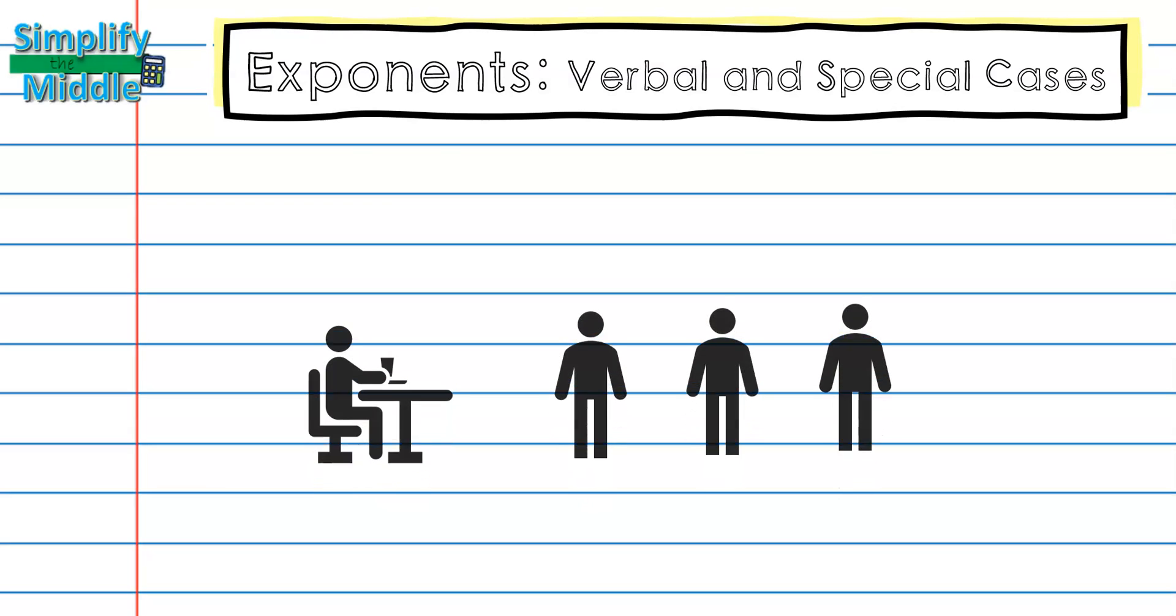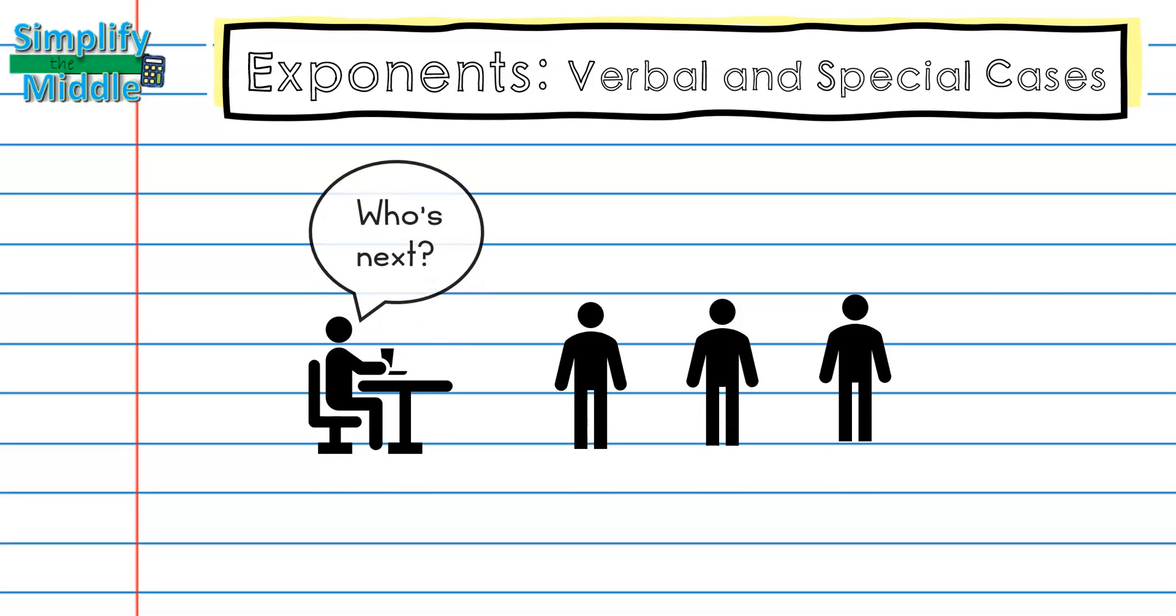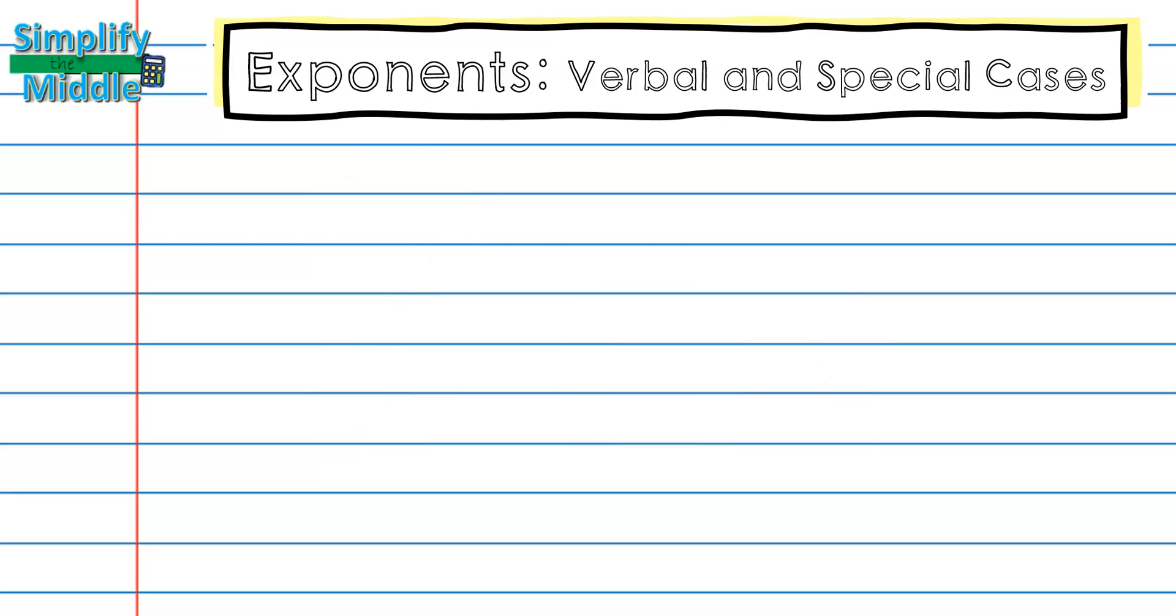Let's say that you're standing in line and someone asks, who's next? The way you describe your position in line is with an ordinal number. First, second, third are all examples of ordinal numbers. Let's see how this relates to exponents.